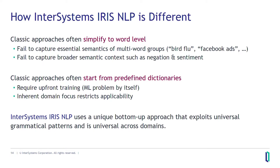Zooming into iKnow — InterSystems IRIS NLP — many tools in the NLP area are very much focused on the word level. That's fine because it's easy to deal with words when looking at large volumes of text. But it fails to capture a lot of important information available in the sentence. For example, a sentence about bird flu is very different than a sentence just about bird or about flu. A sentence about Facebook ads does not necessarily have anything to do with the company Facebook. And the word level alone is not enough to know whether something is negated or whether something is in a positive sentiment context.